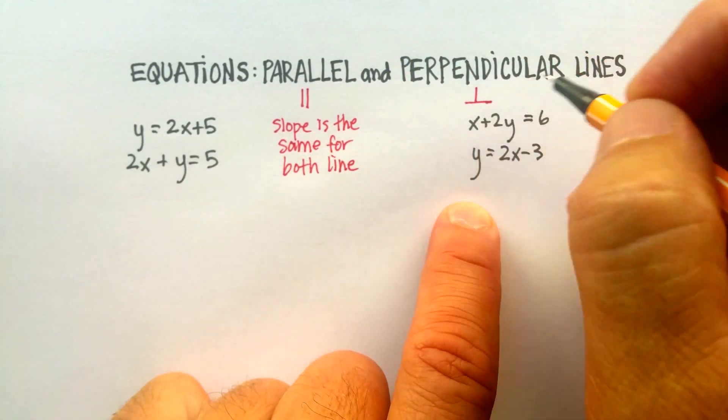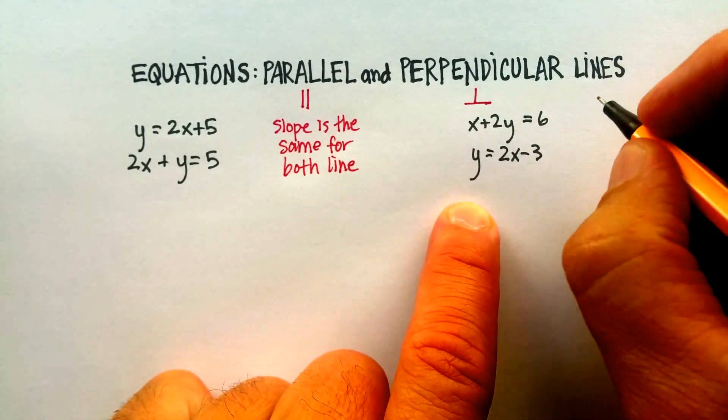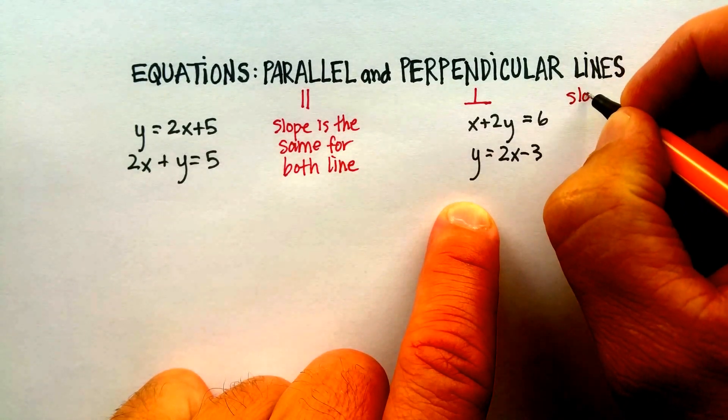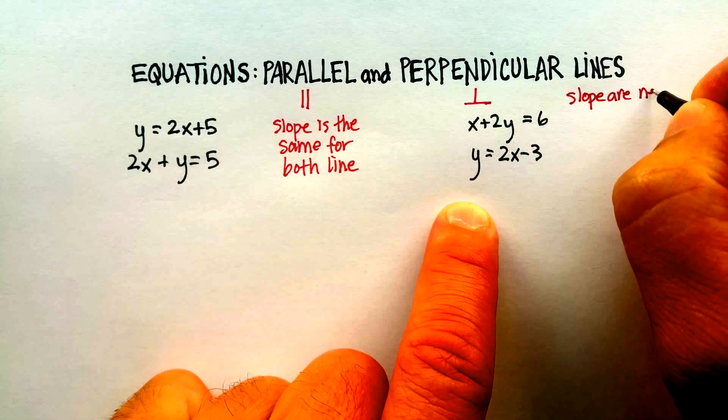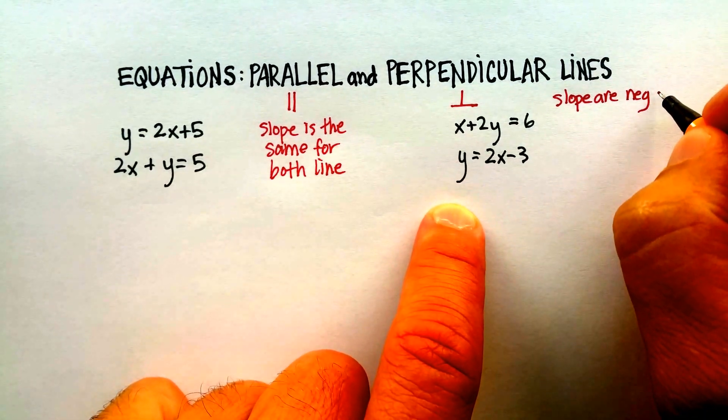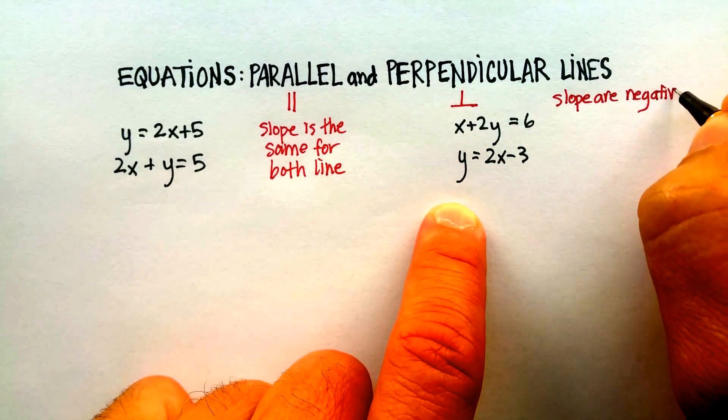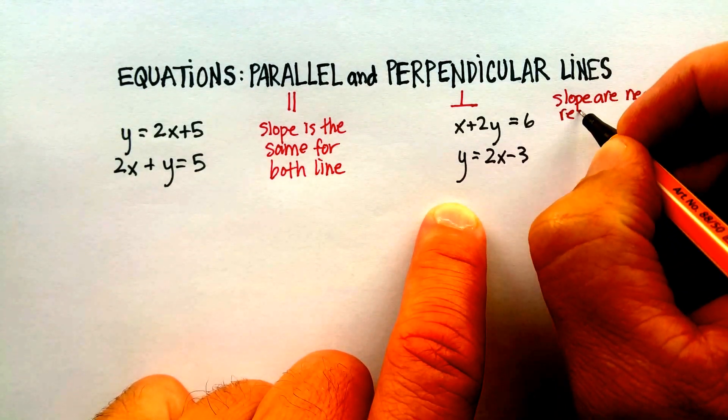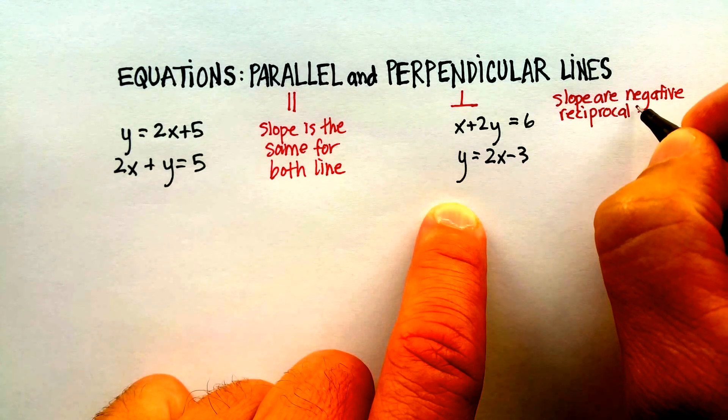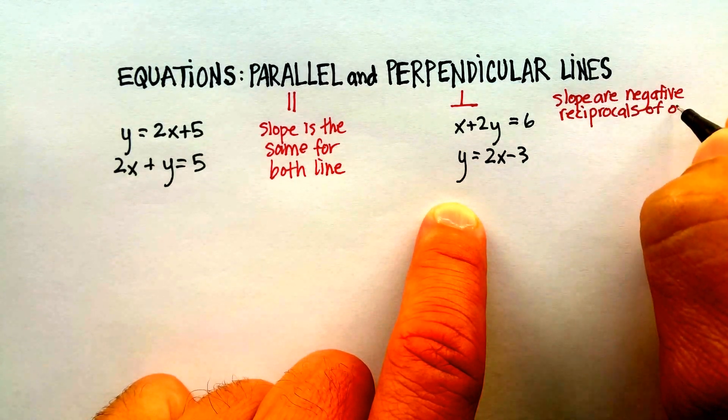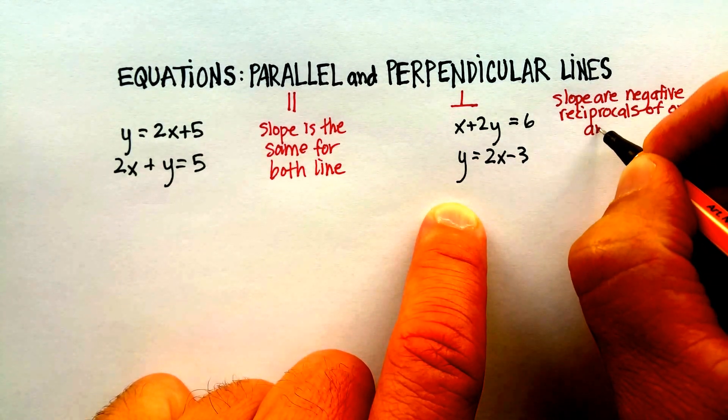For perpendicular lines, the test that you want is that the slopes are negative reciprocals of one another.